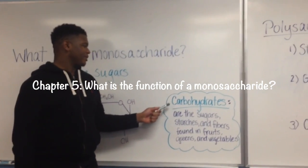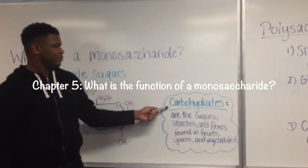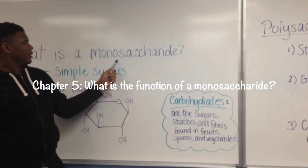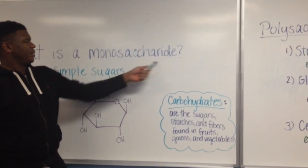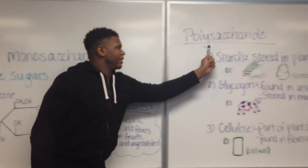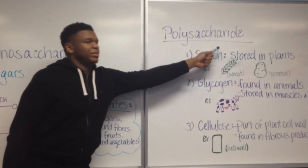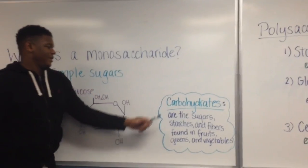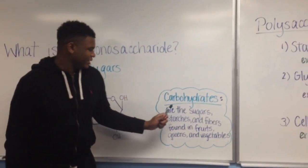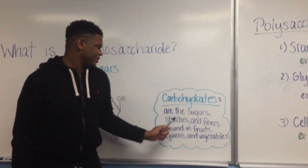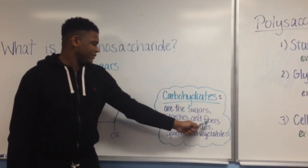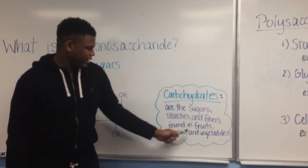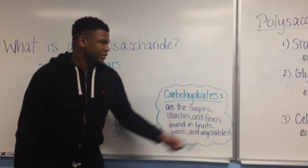Today we will be talking about two carbohydrates, one being monosaccharide and the other one polysaccharide. Carbohydrates are the sugars, starches, and fibers found within fruits, grains, and vegetables.